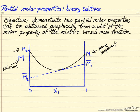At any mole fraction we are given a value which is not the same as the pure component values and not the same as an average. These are the partial molar quantities — partial molar enthalpy for component one here, and over here for component two.